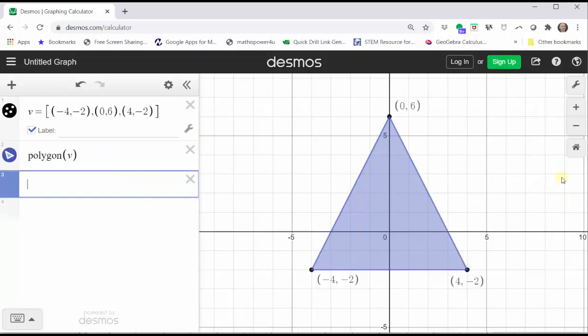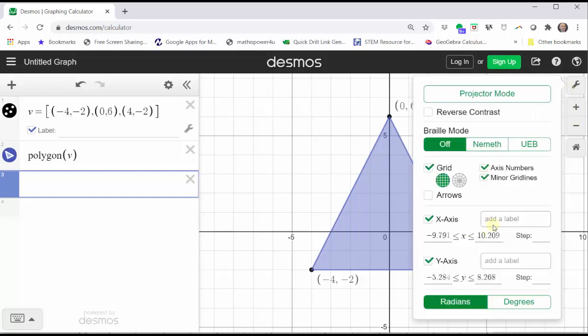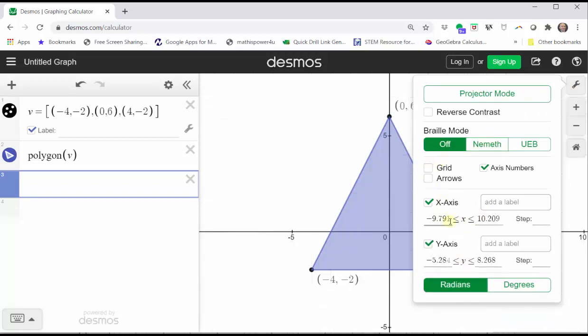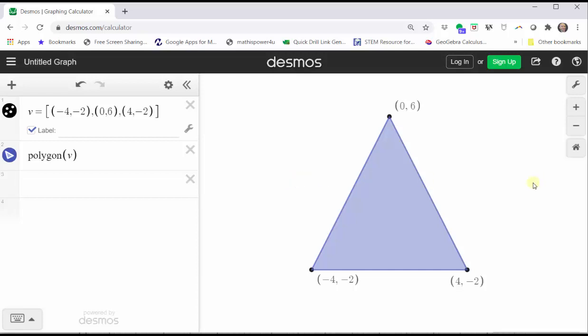If we want to, we can adjust the window here on the right by zooming in or zooming out using the plus or minus, or adjusting the window manually by clicking on the wrench and adjusting the intervals for the X and Y axes. From this menu, we can also turn off the grid and turn off the axes if we did not want to see the coordinate plane. And we could also turn off the labels by unchecking the label box. Let's go ahead and turn those back on though.